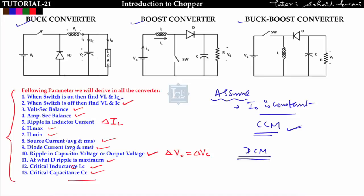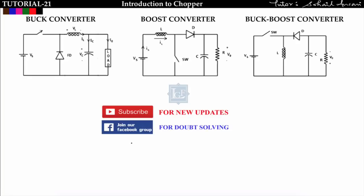The approach for finding all 13 parameters is the same across all three converters, so there is no need to memorize all formulas separately — just follow the steps. In the next lecture we will start the buck converter and derive all these parameters. That's all for this lecture. If you understood the concepts, please like the video and subscribe to the channel. For doubt solving, join our Facebook group. Thanks for watching.